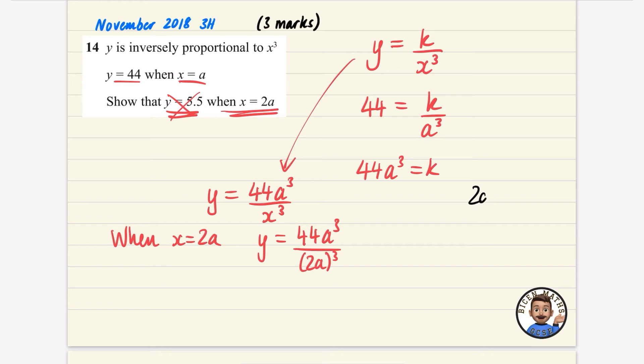Now it might be worth working this out that 2A all cubed, that is 2 cubed times by A cubed, which is 8A cubed. Make sure that you cube the 2 and the A separately. So this is 44A cubed divided by 8A cubed.